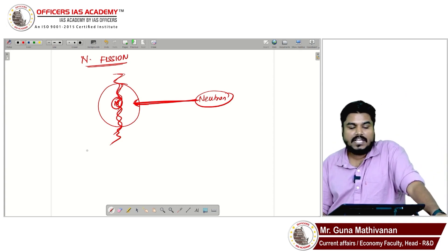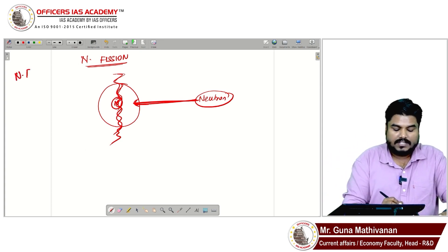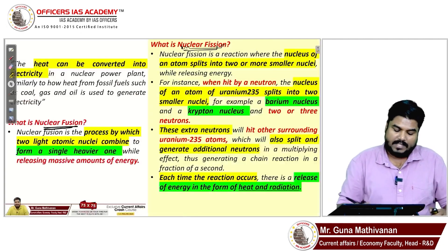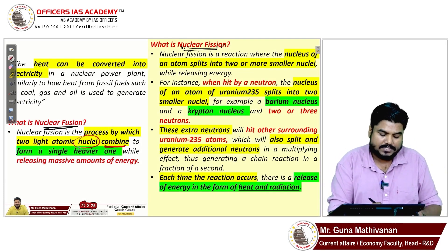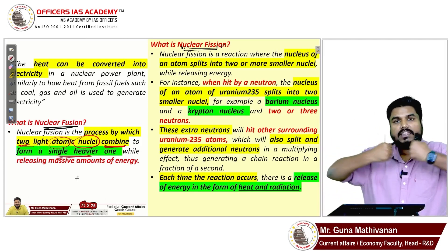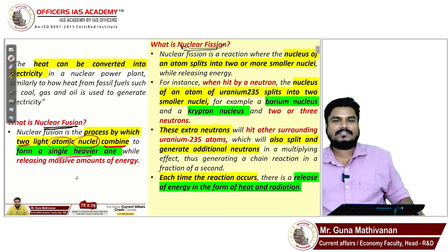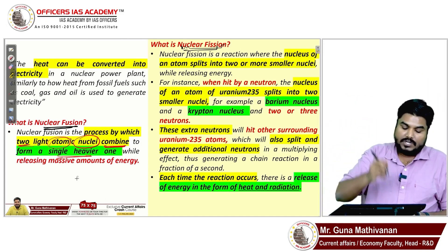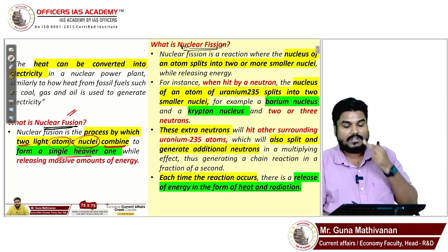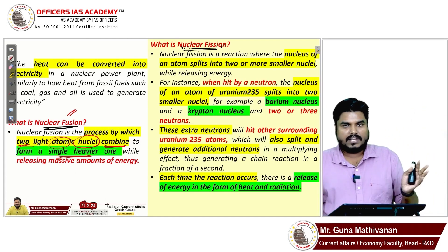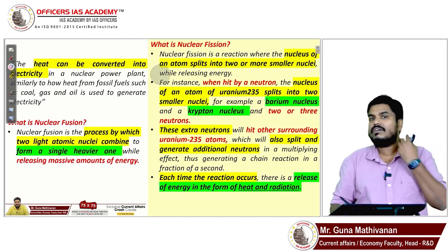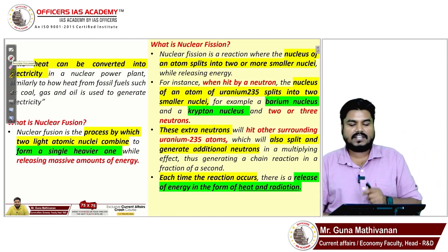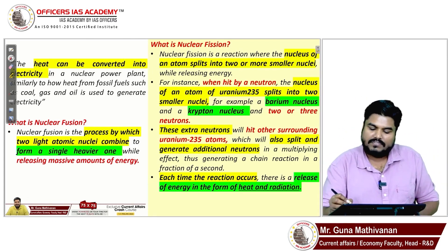In nuclear fusion, we try to fuse two atoms — we combine the nuclei of two atoms to make a single heavier atom. That fusion also results in an enormous amount of energy. Nuclear fusion goes on inside the sun. All nuclear reactors we have today are nuclear fission reactors; nuclear fusion reactors are still at the experimental level.